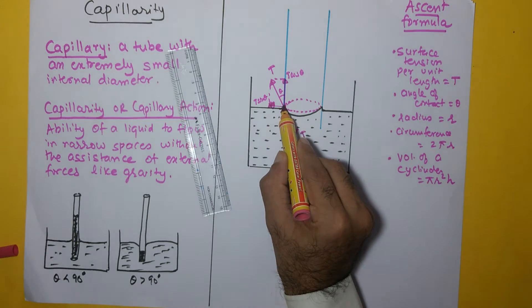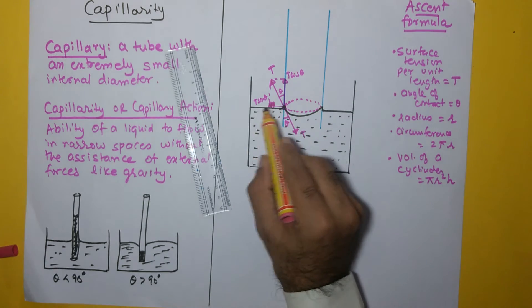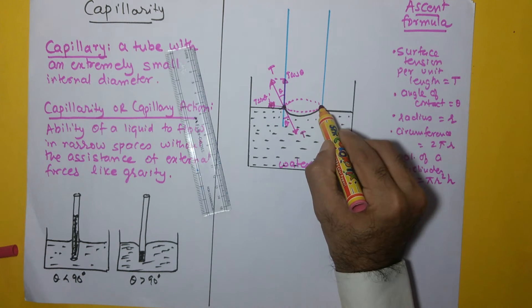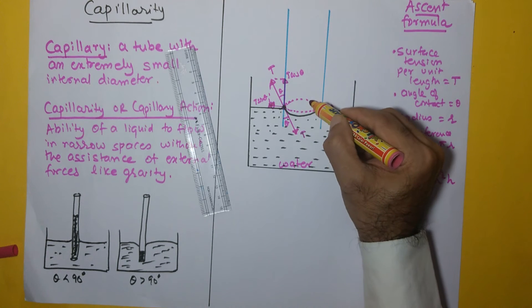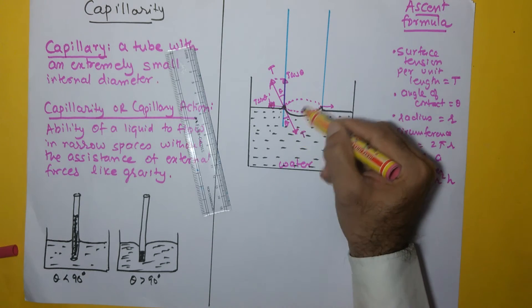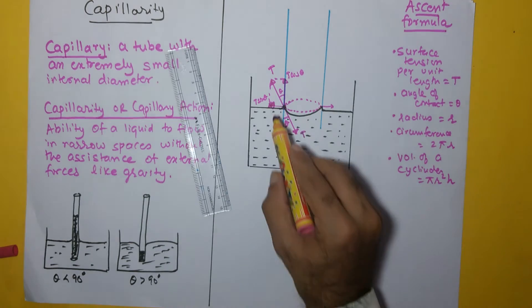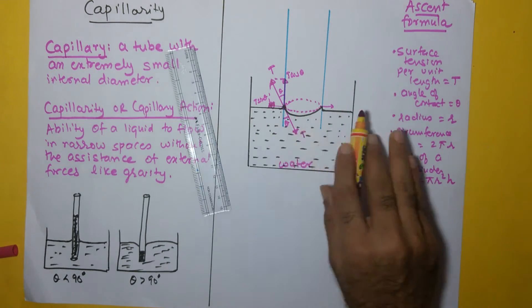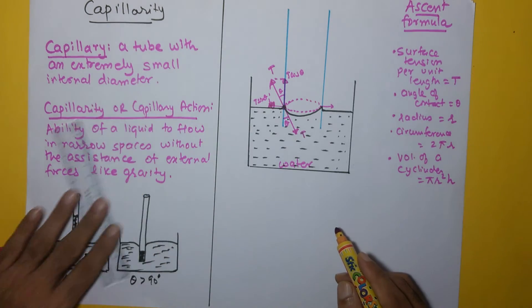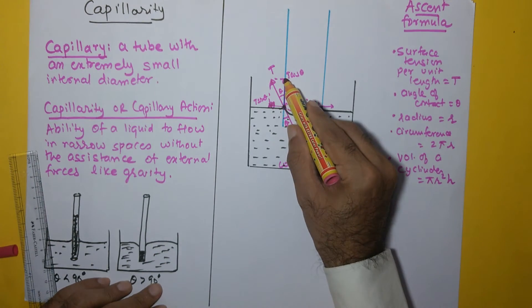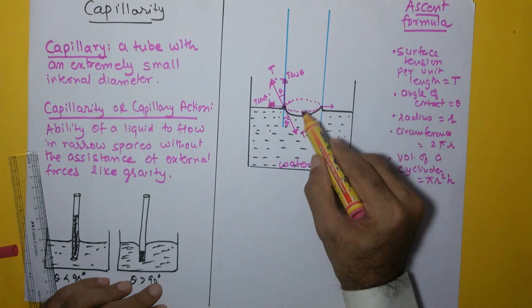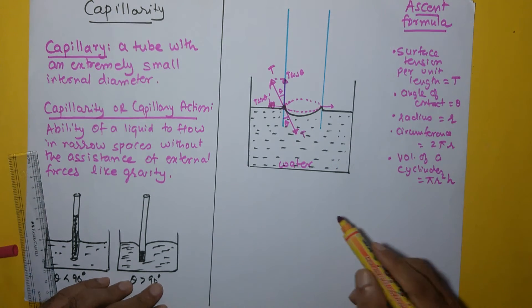Whatever happens at one point happens along the entire periphery. Looking at T sinθ — at all locations around the circumference, T sinθ acts inward in its respective direction. For any molecule, there is a diametrically opposite point where T sinθ acts in the opposite direction. All these T sinθ components cancel each other out, so there is no net force acting in the horizontal plane. But that is not the case with T cosθ, which acts vertically upward at every point along the entire circumference.